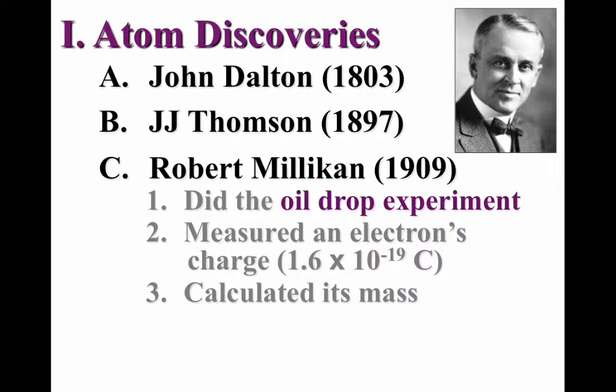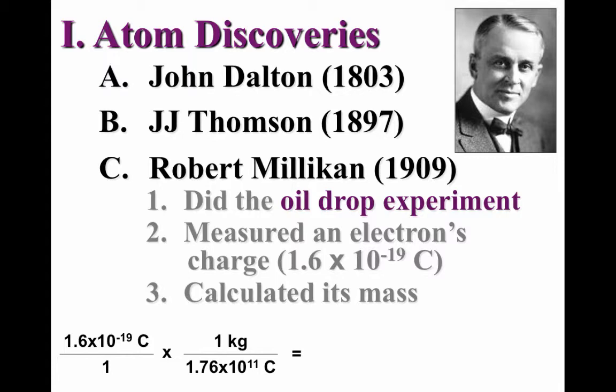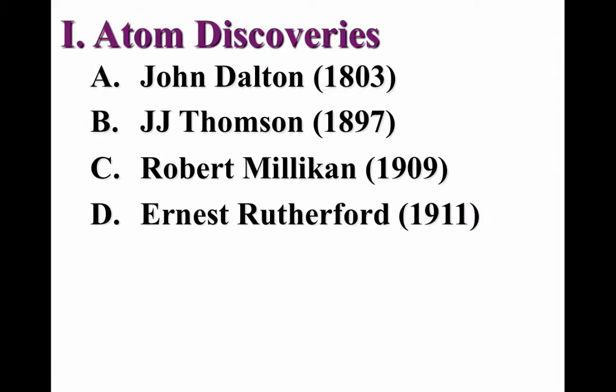This can be done by applying the principles of dimensional analysis. Millikan measured the charge to be 1.6 times 10 to the negative 19th coulombs. Thomson had previously determined that the charge-to-mass ratio was 1.76 times 10 to the 11th coulombs per kilogram. So the mass of the electron was calculated at 9.09 times 10 to the negative 31 kilograms — and that is tiny.